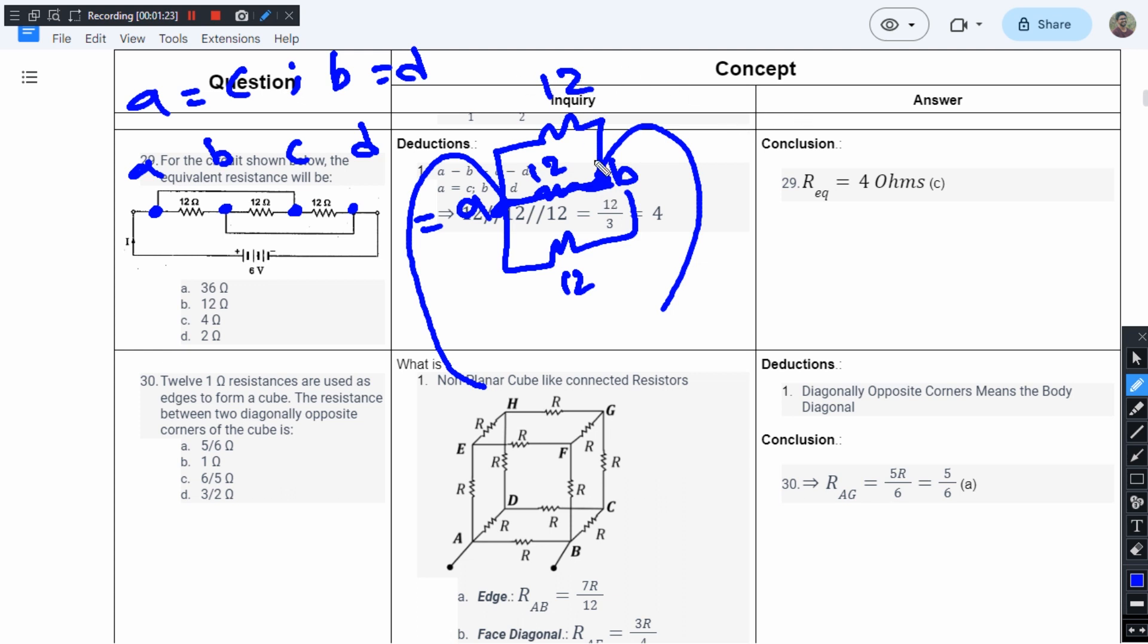We have three 12-ohm resistances in parallel. When three equal resistances are in parallel, we use the formula R/3. Since R is 12, so 12/3 equals 4 ohms. We have 4 ohms in option C, so option C is the right answer.